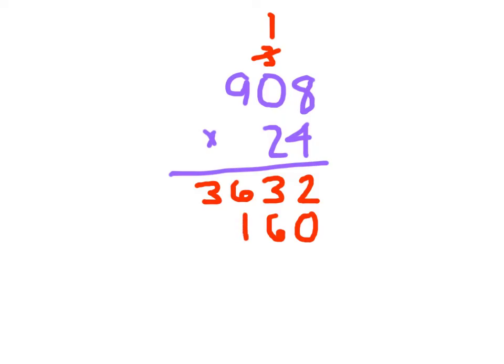And 2 times 9, which is 18. We carefully add those two numbers together. And this is what we get for our answer. 21,792.